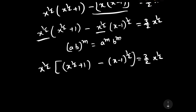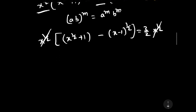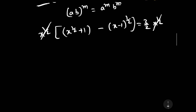Cancelling x to the power 1/2 from both sides, we have: square root of x plus 1 minus square root of (x minus 1) is equal to 3/2.